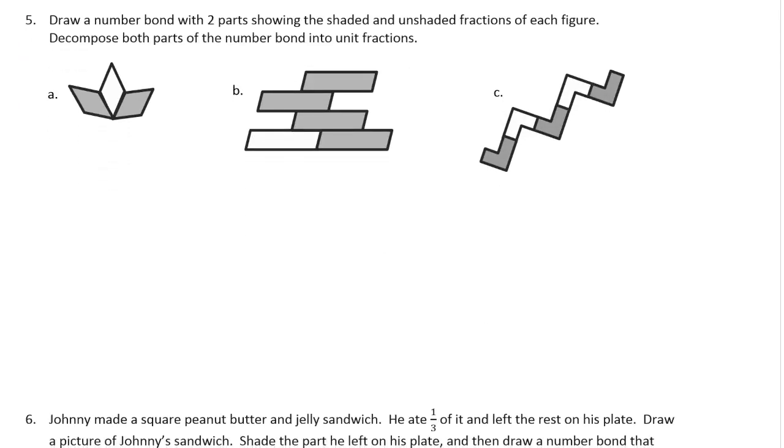Number 5. Draw a number bond with two parts showing the shaded and unshaded fractions of each figure. Decompose both parts of the number bond into unit fractions. So I'm just going to do one. I'll do the first one for an example. And really then you'll know. If you don't remember this from if you did it already in class. Remember what this is. I'll never be able to describe it except for just to show it to you by doing the first one.